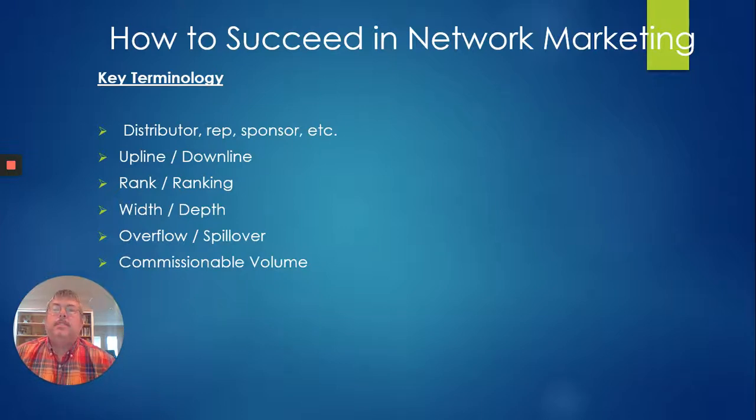Commissionable volume, that's the points that are associated with any volume that goes through an organization. This is how you get paid off your commissionable volume. Now, in a true pyramid scheme, there's no product flowing. So especially in a company that offers multiple products, the easiest way to figure out compensation is to attach points to those products. So you might have a more expensive product that's worth 50 points and you might have a less expensive product that's worth 20 points, for example.